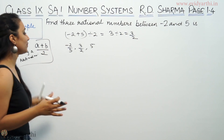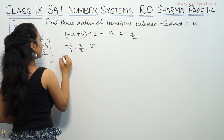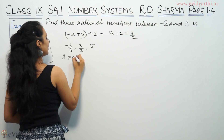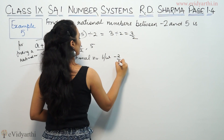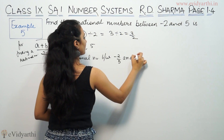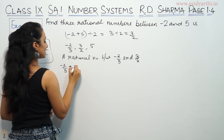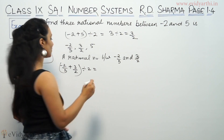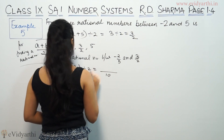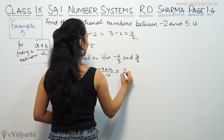Now we are going to find a rational number between minus 2 by 5 and 3 by 2. So a rational number will be minus 2 by 5 plus 3 by 2, divided by 2. When we find the LCM, the LCM here is 10, giving us minus 4 and 15.